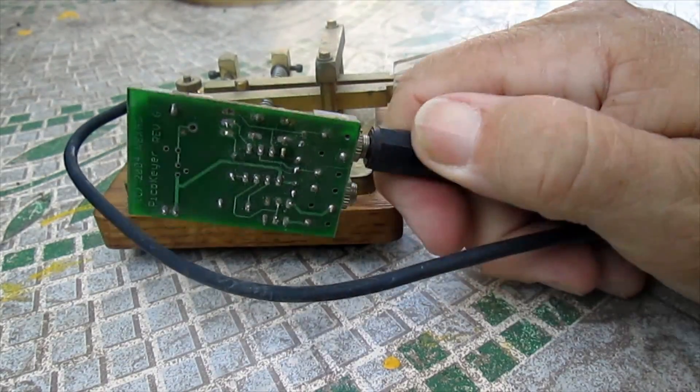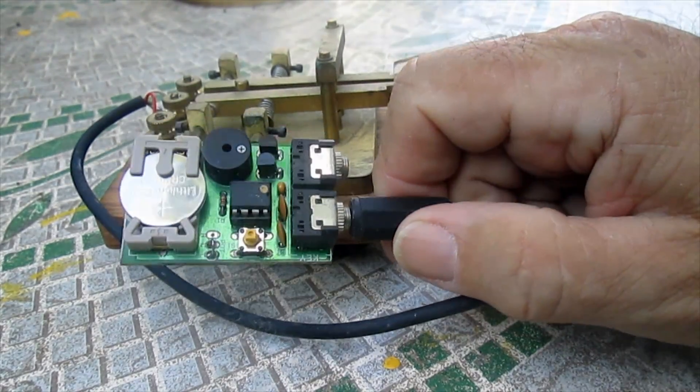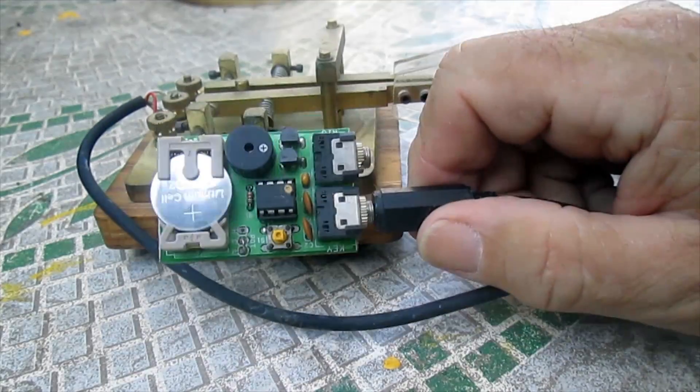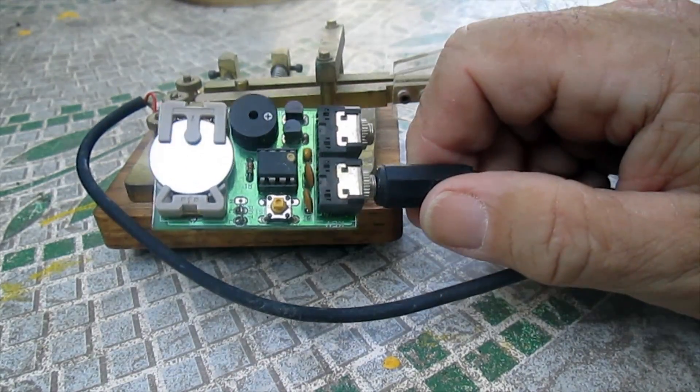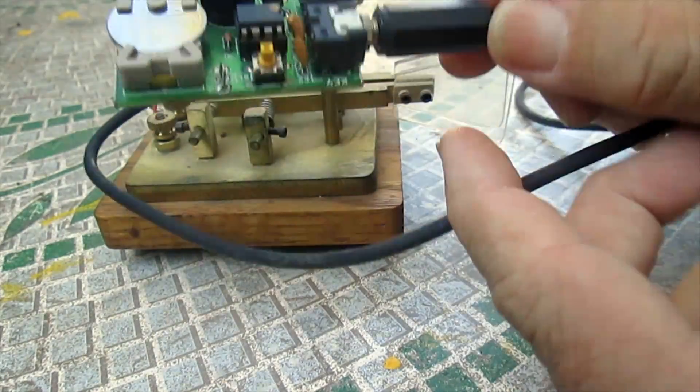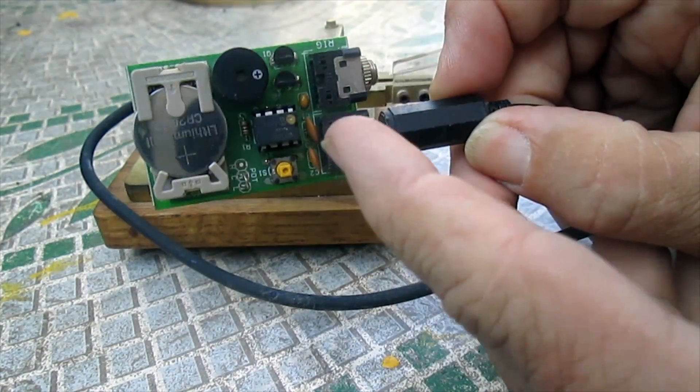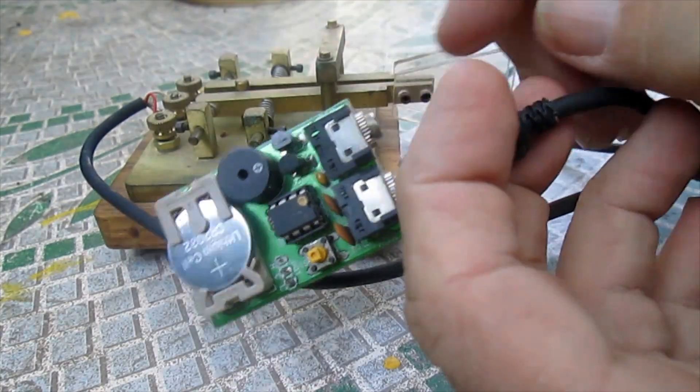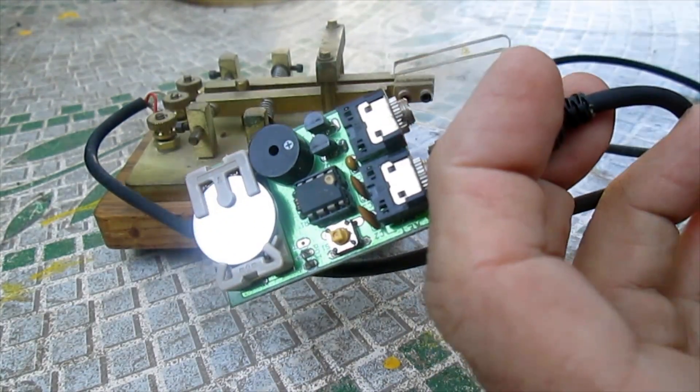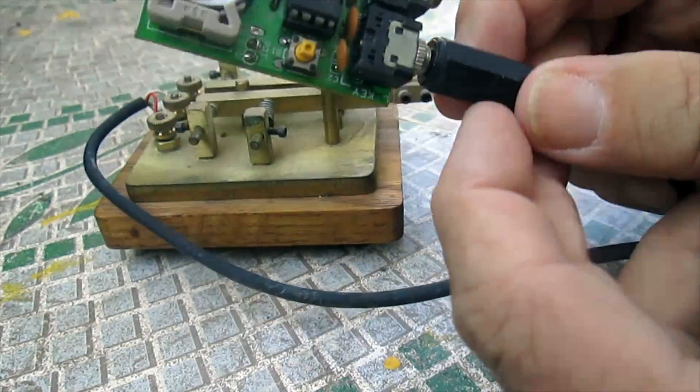But if you don't have one built in, you can use a separate one. What I do is instead of plugging the key into the transceiver, I plug it into this board, then I'd run another plug from here into the transceiver.